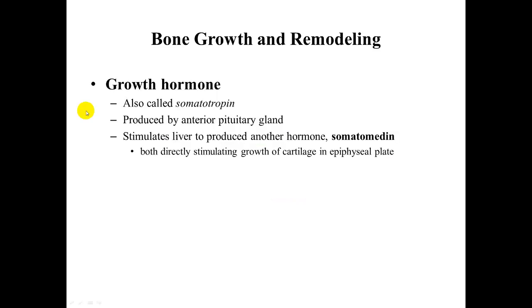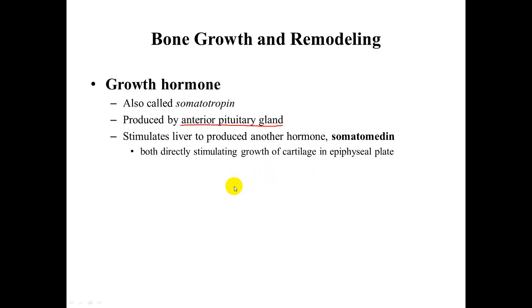One example is growth hormone, also called somatotropin, produced by the anterior pituitary gland (adenohypophysis). It stimulates the liver to produce another hormone called somatomedin. Both directly stimulate growth of the cartilage in the epiphyseal plate, resulting in increased interstitial growth in the bone.